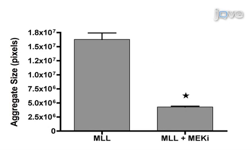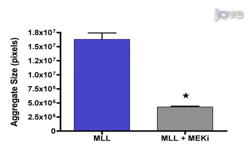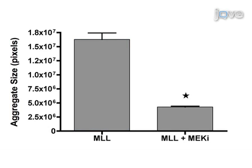Here, the difference between MEK inhibitor-treated MLL hanging drop culture aggregate size and untreated control aggregate size is demonstrated. The asterisk represents a statistically significant difference of p<0.0001 as determined by Student's t-test between untreated and MEK inhibitor-treated aggregates, suggesting that MEK inhibitor treatment results in significantly smaller and more compact aggregates.